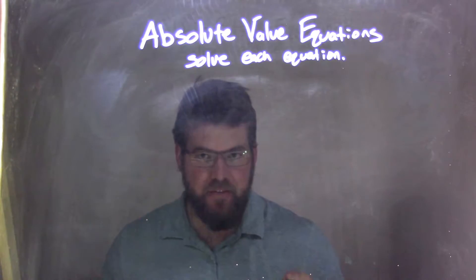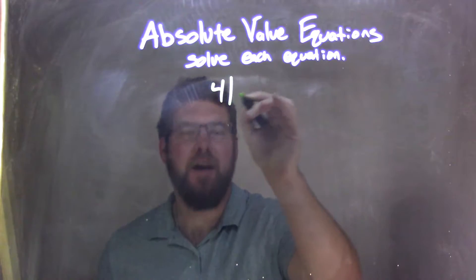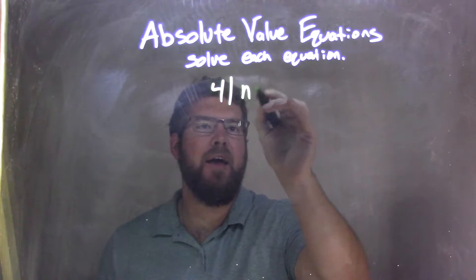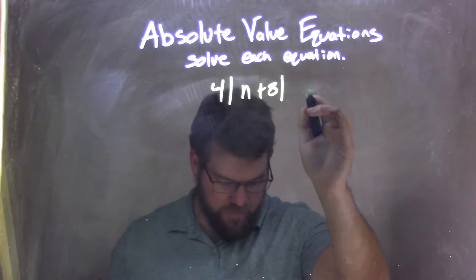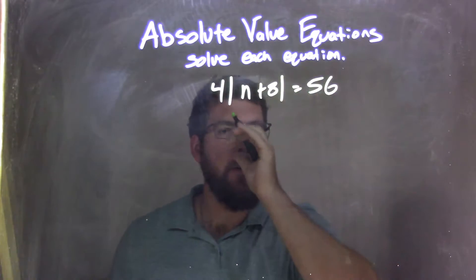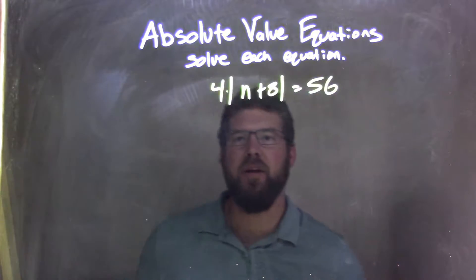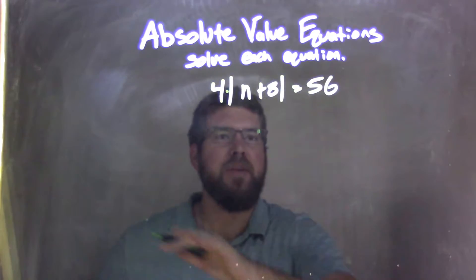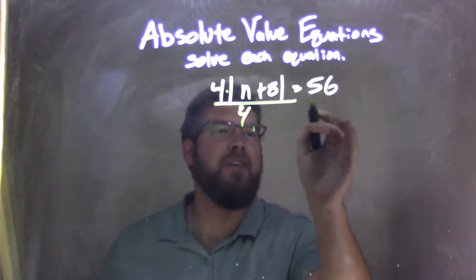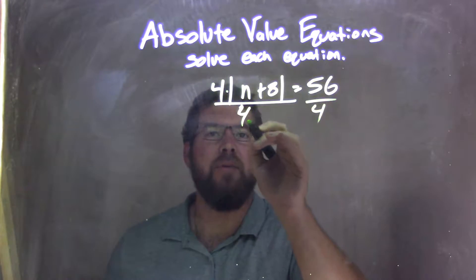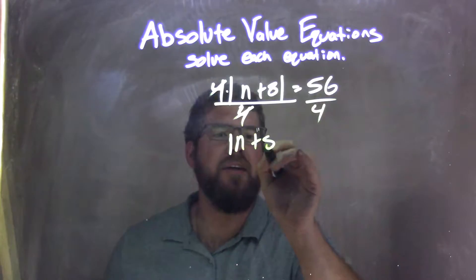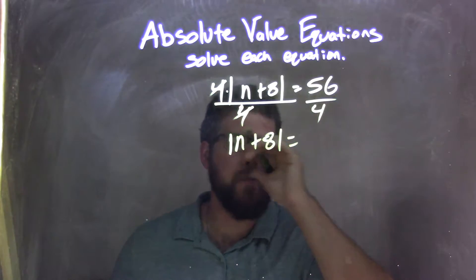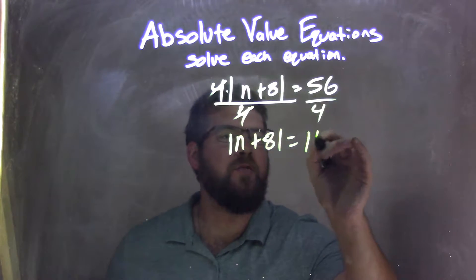If I was given this equation: 4 times |n+8| equals 56. Remember, that's multiplication right there, 4 times the absolute value of n plus 8. Since the opposite of multiplication is division, I'll divide both sides by 4. I need to isolate that absolute value. The 4 eliminates, leaving me with |n+8| equals 56 divided by 4, which is 14.